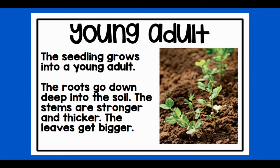Young adult. The seedling grows into a young adult. The roots grow down deep into the soil. The stems are stronger and thicker. The leaves get bigger.